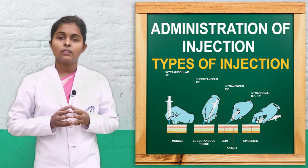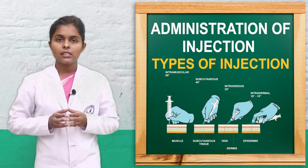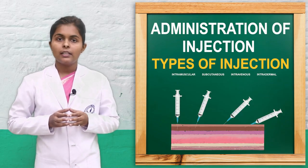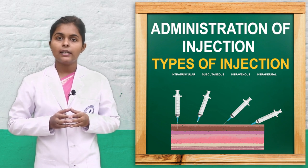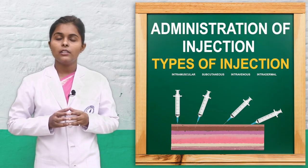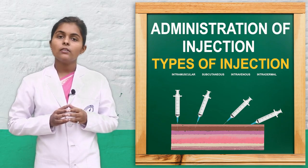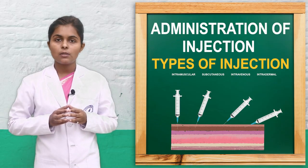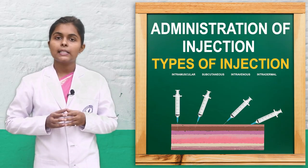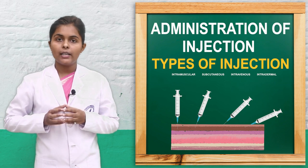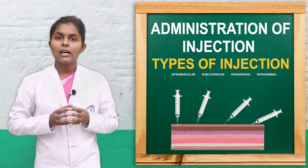Next is intraperitoneal — medications given into the peritoneal cavity. Then intrathecal or intraspinal injection means medication given at the spinal cord. Intraosseous injection means medication given into the bone marrow. Finally, hypospray — where medication is sprayed over the skin or tissue using a pressure of 125 pounds to force the medication out; there are no rashes or marks on the skin.